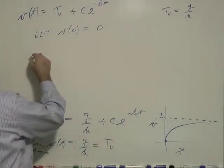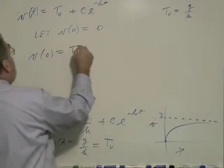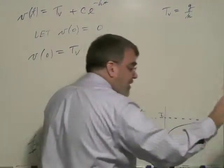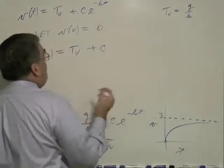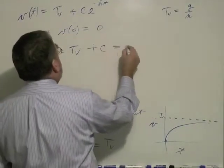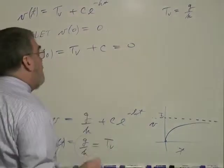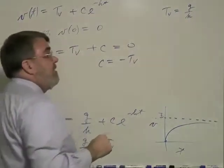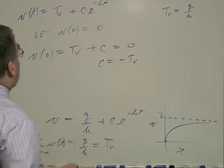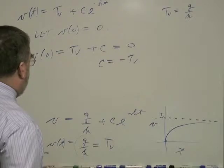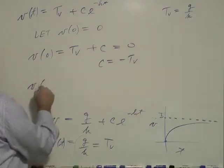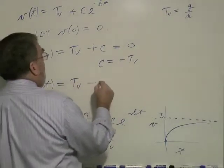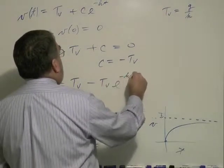Then we have v of zero is TV plus c times e to the zero. It's equal to zero, which means that our constant c is going to be minus terminal velocity.